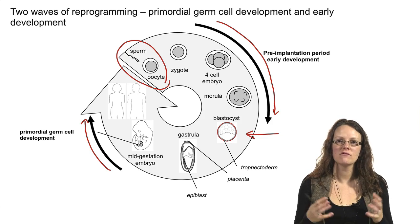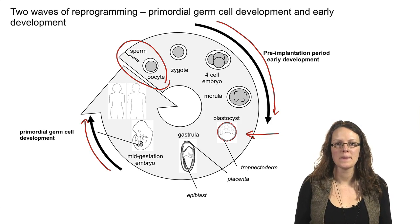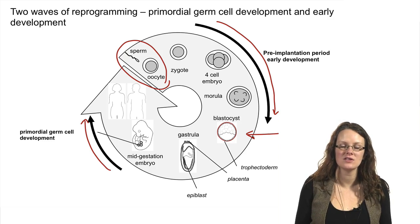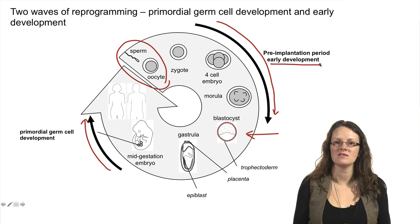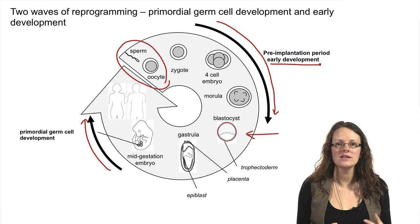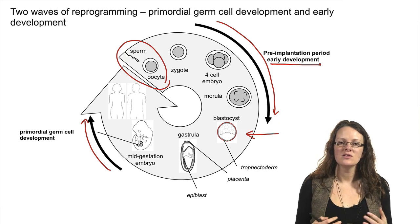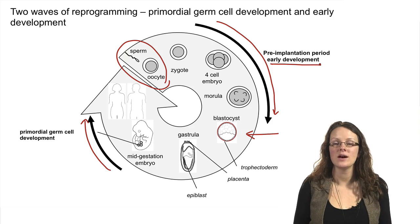After this stage we have resetting of epigenetic marks, but this happens in a cell-type specific manner. If you think about what I told you last week in terms of X inactivation, during this pre-implantation period there wasn't removal of X inactivation — rather we had imprinted X inactivation, where the silencing of the paternal X chromosome was maintained. This starts to tell you that different regions of the genome can be treated differently by the reprogramming process.